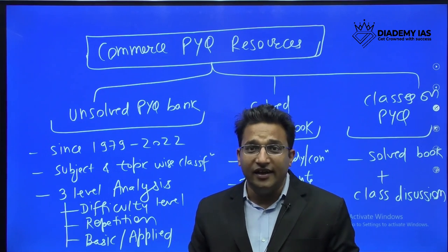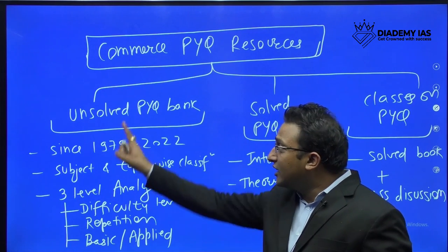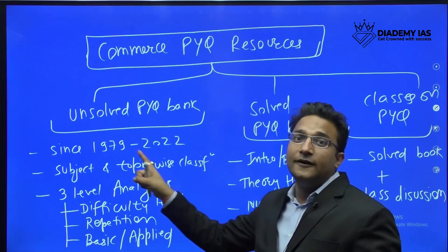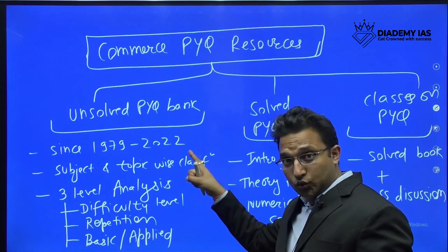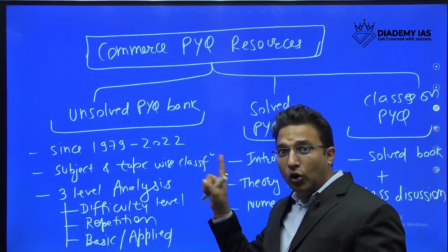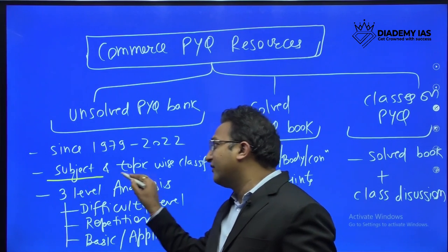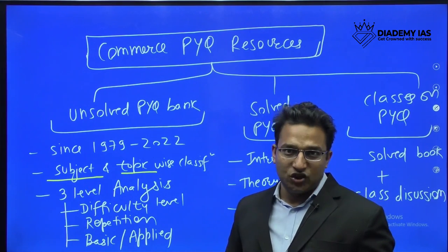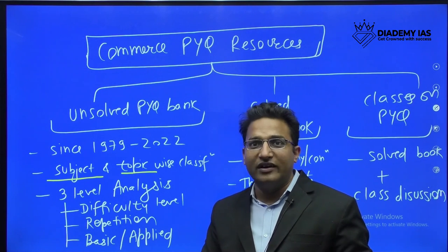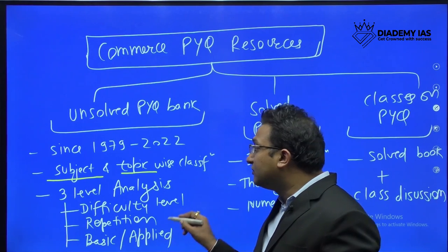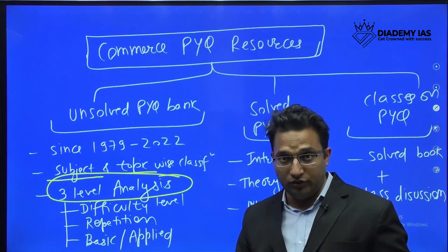This has been a long-pending demand of students, and we have three solutions for this. First is the unsolved previous question book. In this book, we will be covering questions from 1979 till 2022. All subjects will be covered with subject-wise and topic-wise coverage. For example, in Financial Management, there will be topic-wise coverage.